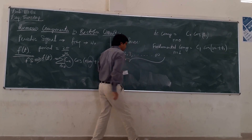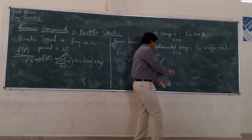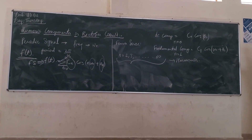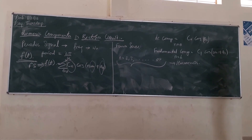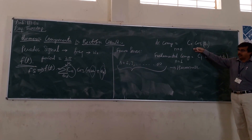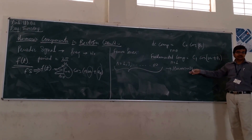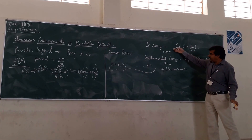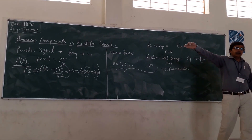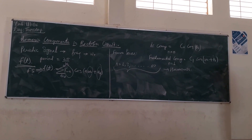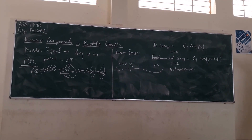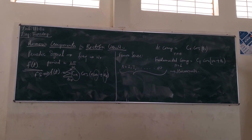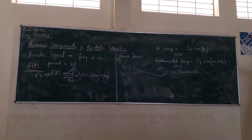Considering the signal, we can say that the signal consists of a DC component, a fundamental component, and a harmonic component. Or we can say that the summation of the DC component, the fundamental component, and the harmonic component will give the required periodic signal. This is one way of decomposing the periodic signal, and it is decomposed by the Fourier series. This is called Fourier series.